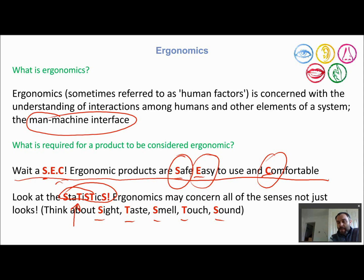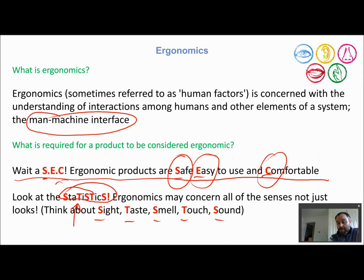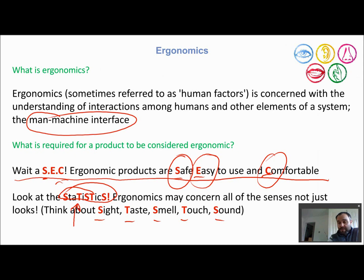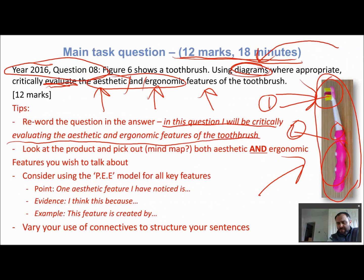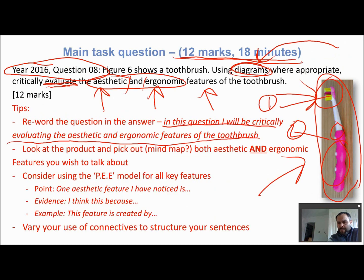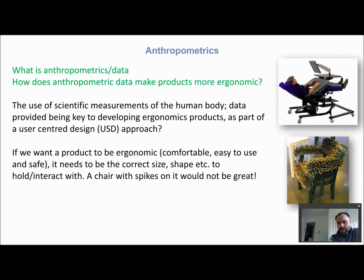If we're looking at sight, we might refer to the color or texture of the product — though texture is probably more related to touch. Taste is relevant here because when you put the toothbrush in your mouth, the feel of it is an ergonomic factor. In terms of smell, toothbrushes don't generally have a scent, but a product could have one that aids use. Sound — when you put it in your mouth and brush — might have some emotional impact. All the senses help build a detailed ergonomic analysis.